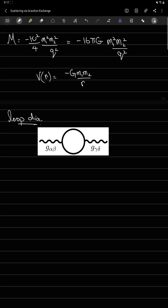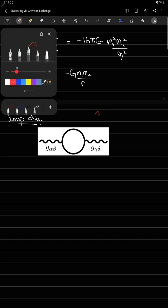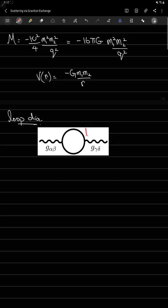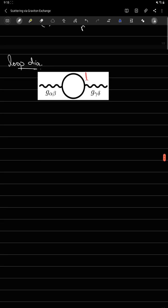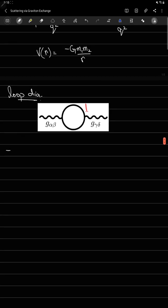Now I can write down the amplitude for this diagram. If I say that this loop has a momentum l, I'll have to integrate over l because it's forming a loop. This comes from your normal course on quantum field theory. Let's write down the amplitude—it's simply going to be the integral over d4l over 2 pi to the fourth. You'll have iota kappa over 2.